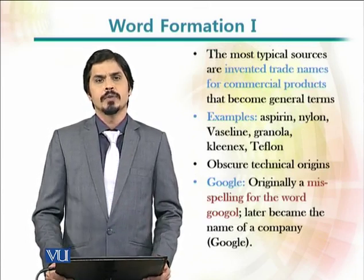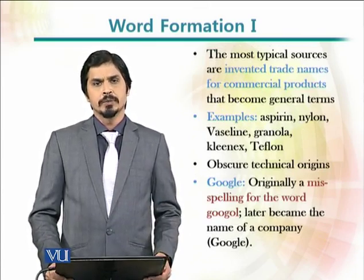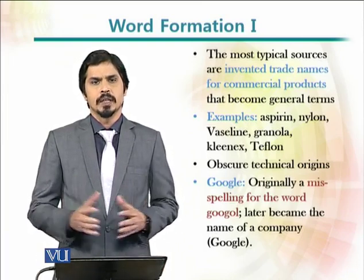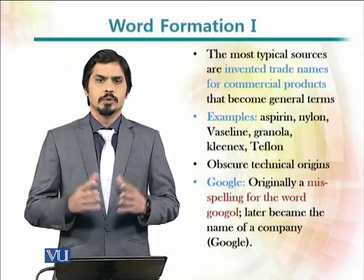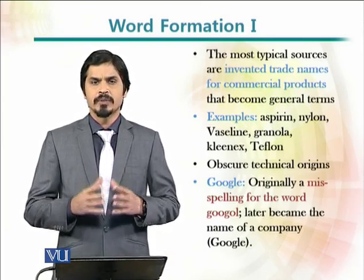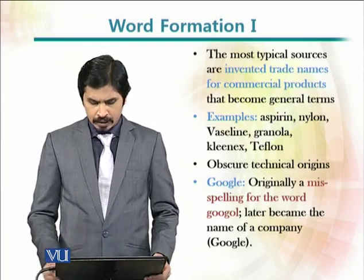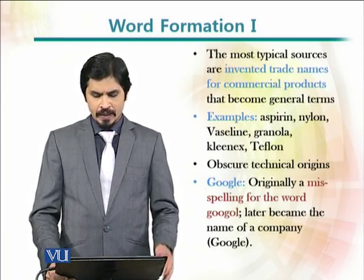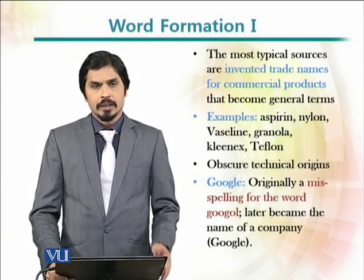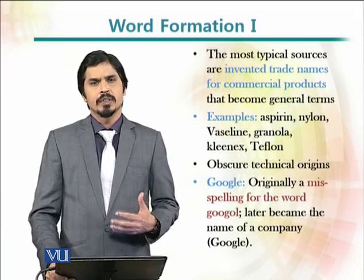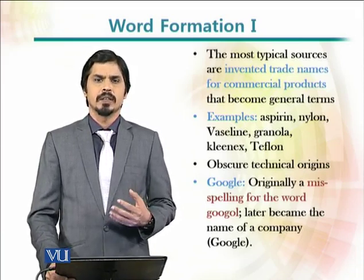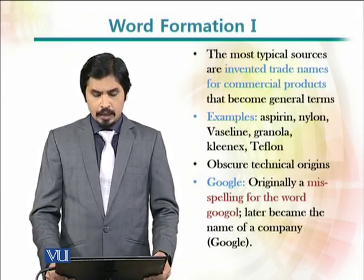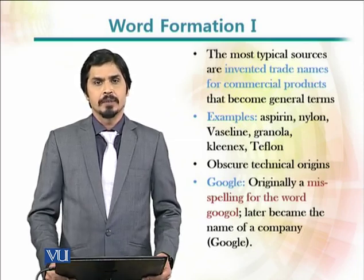One of the most typical forms of coinage is the invention of trade names, which are created by various companies and then become popular for daily use. Some examples include aspirin, nylon, vaseline, and granola. These may start as obscure technical terms but later become regularly used by speakers of various languages. Google is a very recent example.